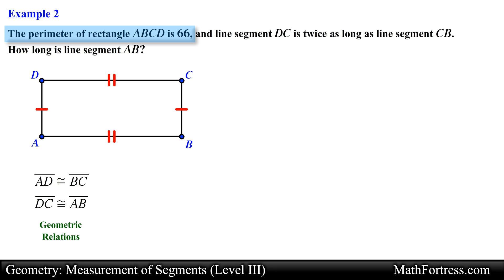We know that the perimeter is equal to 66. This means that if we were to add all the line segments, it should equal 66. In order to solve an equation, we need to determine our unknowns and assign variables to these unknowns.